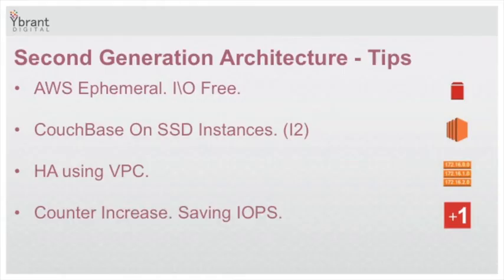A few tips from our journey. First, use AWS ephemeral storage — it's IO-free. In AWS, you pay for every single IOPS you perform, but if you use ephemeral storage you won't pay. Every single impression was not logged into Couchbase — it was clear from day one that writing every impression to Couchbase would prevent you from getting the benefits out of it. So we write impressions to ephemeral storage, which is really fast, and then ship from there to real-time log management.